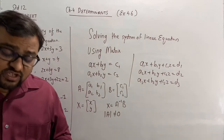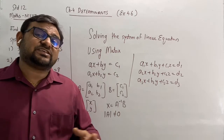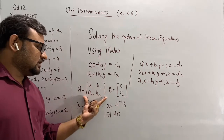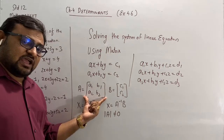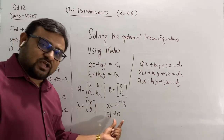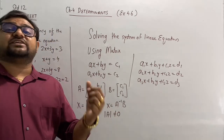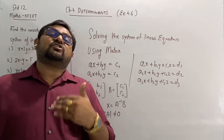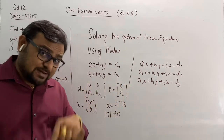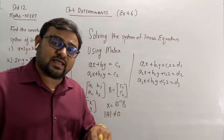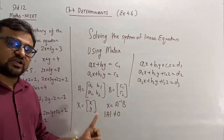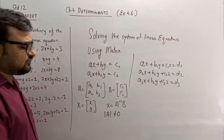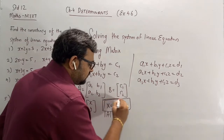So two types of questions are asked. First, check the consistency of the linear equation — in that case, just form the matrix using the coefficients and find out its determinant value. If it is not equal to 0, it is consistent. If it is equal to 0, it is not consistent. Second, find out the value of x, y and z — in that case, first find out the consistency, meaning determinant value must not be equal to 0, and then use the formula X equal to A inverse B.